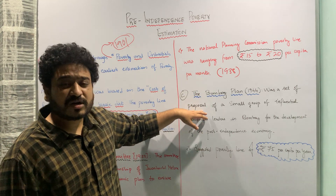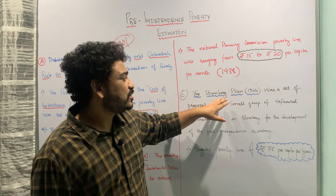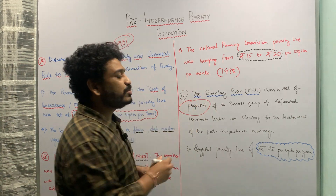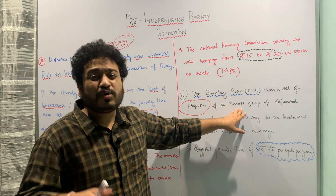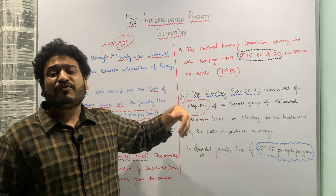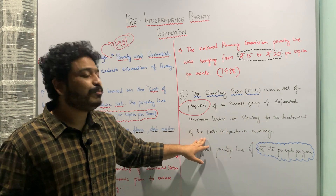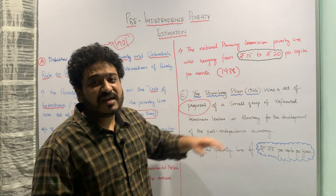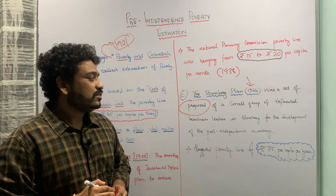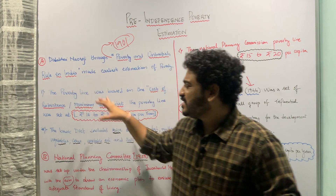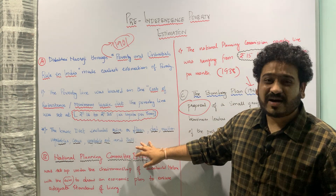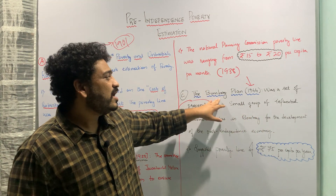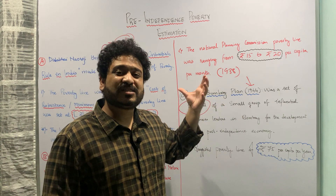The third angle is the Bombay Plan of 1944, which was not from any government per se. These were a set of proposals given by a small group of influential businessmen in Bombay to sketch out the development plan for the post-independence economy. So you can see the different lenses brought about by Dadabhai Naoroji, by Jawaharlal Nehru under the National Planning Committee, or by influential businessmen in the Bombay Plan.